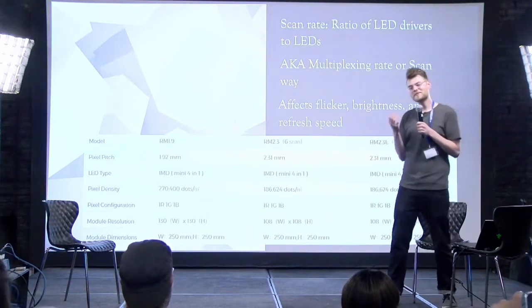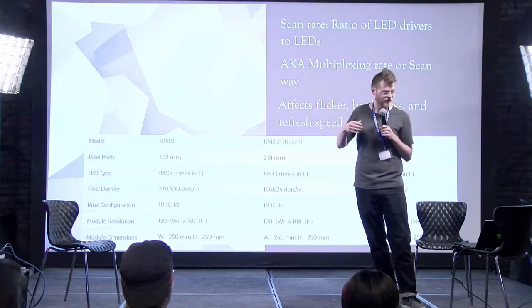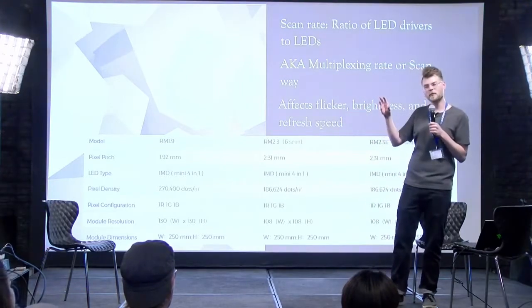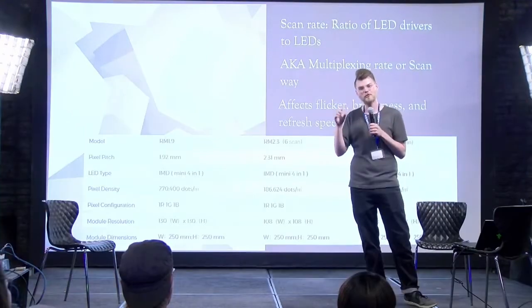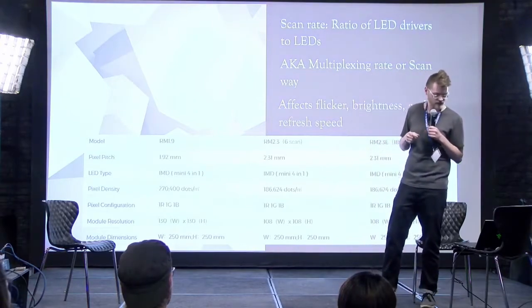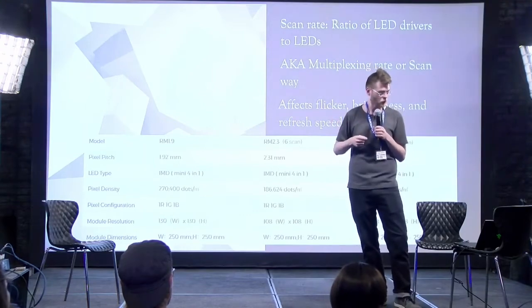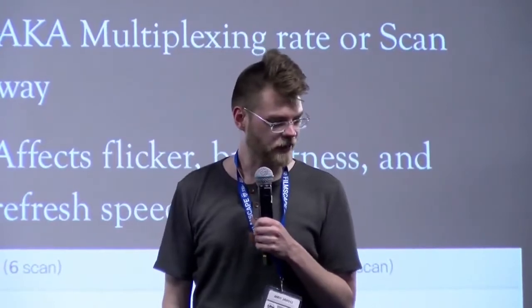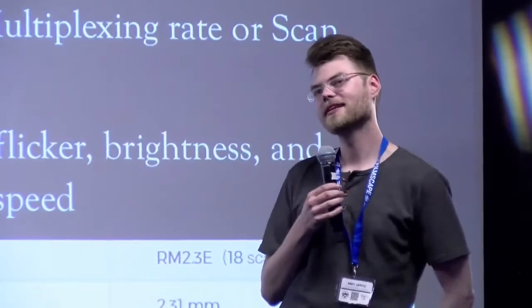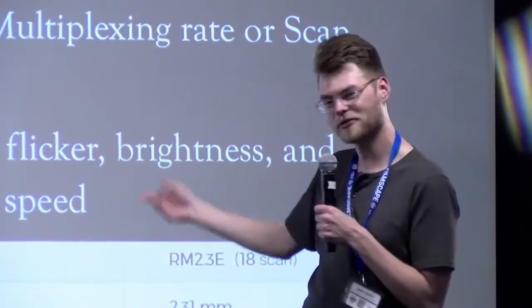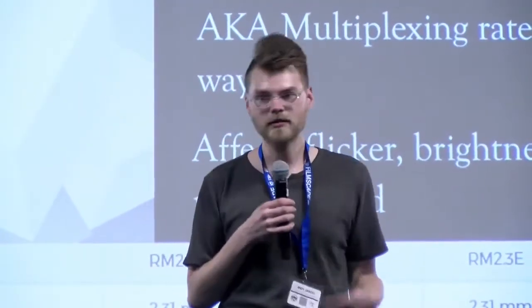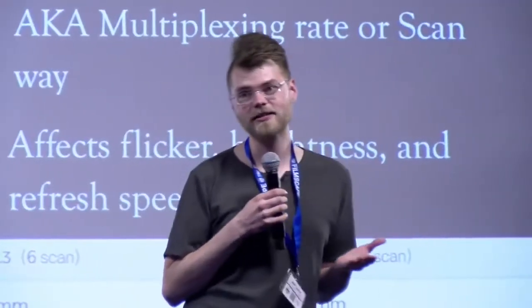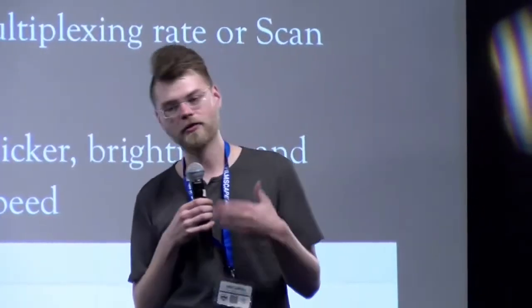The scan rate also affects brightness — if only one section of pixels is lit up at a time within a fixed frame budget, pixels lit for a shorter duration are not as bright. Lower scan screens will be brighter. And manufacturers will sometimes conveniently leave things off the spec sheet — the 1.9mm panel here has no mention of scan rate anywhere on the spec sheet. They have an incentive to sell it as a sharper panel, but when I see that, I get scared. They're not telling us a key specification we need.